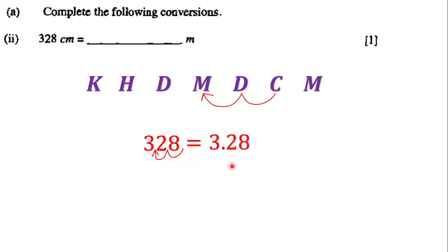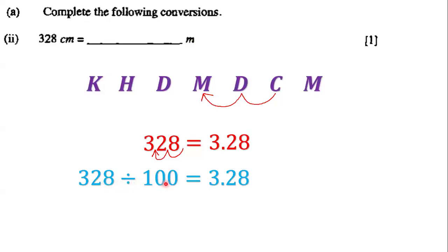Showing our working: 328 divided by 100 — we divide by 100 because we moved two places to the left — which equals 3.28. So 328 centimeters equals 3.28 meters.